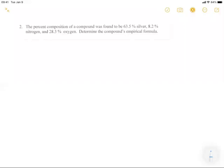Okay. Here is another example. The percent composition of a compound was found to be 63.5% silver, 8.2% nitrogen, and 28.3% oxygen. Determine the compound's empirical formula. Again, you're going to start...